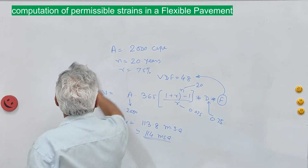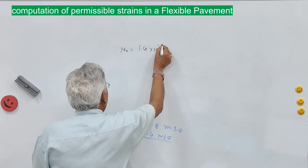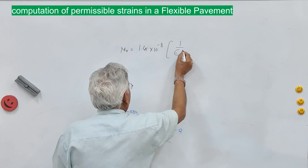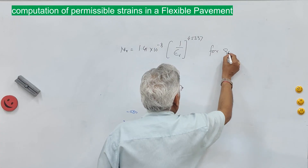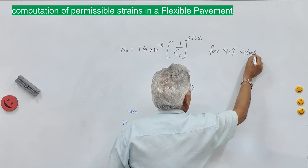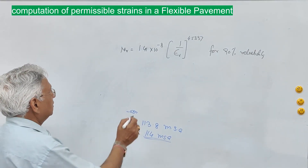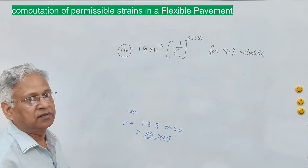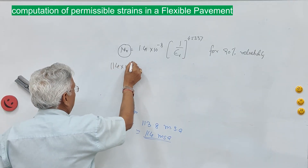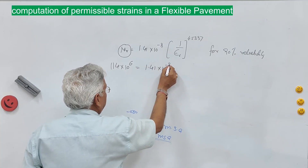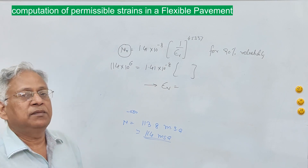Let us first take the rutting criteria. As per IRC 37, the rutting equation is: N_R = 1.41 × 10^(−8) × (1 / ε_v)^4.5337 for 90% reliability. There is another equation for 80% reliability; you can use the equation corresponding to your design road type. Here N_R is the number of repetitions over the design life, so substituting 114 × 10^6 you can find ε_v.